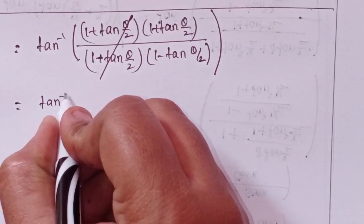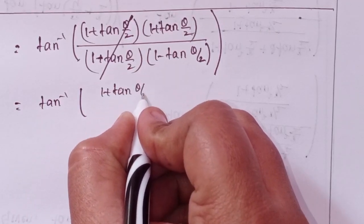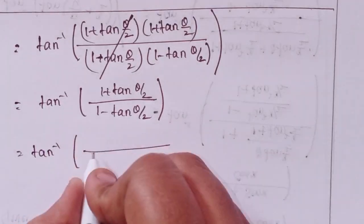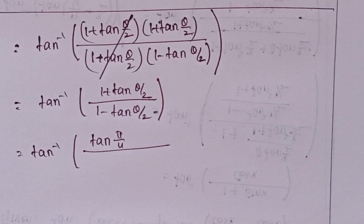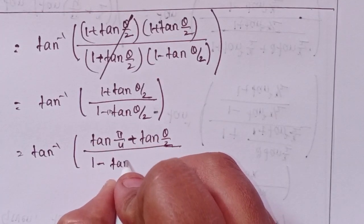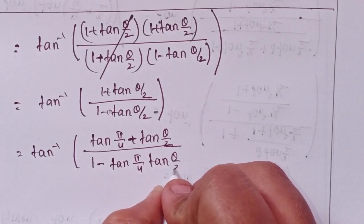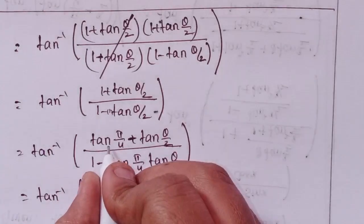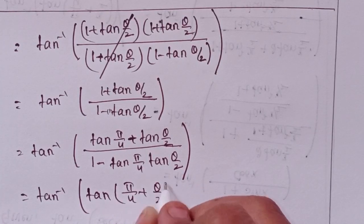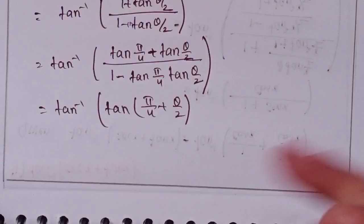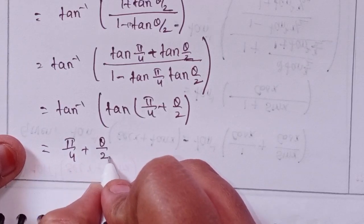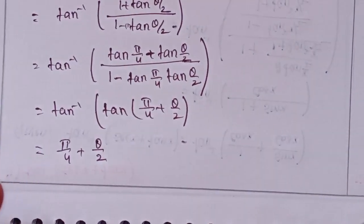Tan inverse of tan(π/4 + θ/2). Using the tan(a+b) formula where tan a plus tan b over 1 minus tan a tan b equals tan(a+b). Tan inverse and tan cancel, so we get π/4 plus θ/2. Here θ means tan inverse x.